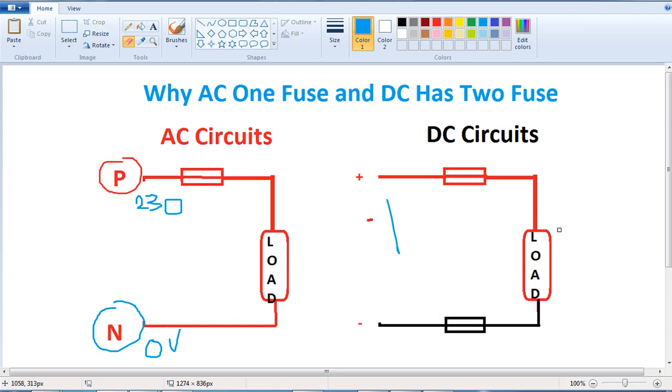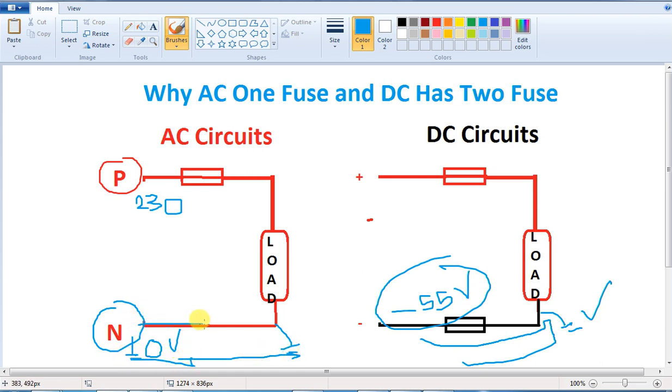But if you look at the negative, what about the fault? What is the current flow? Because this is minus 55 volts, there is potential here. For this reason, we need a DC fuse on both sides. We have a ground here. The ground is nothing but a link. So we have current flow through the load. So we need a fuse here too.